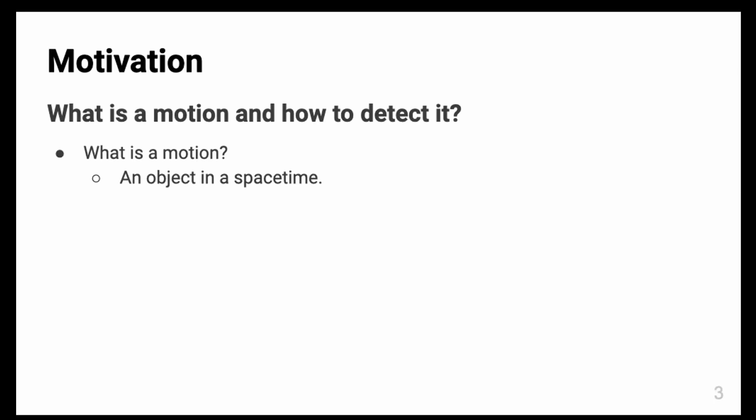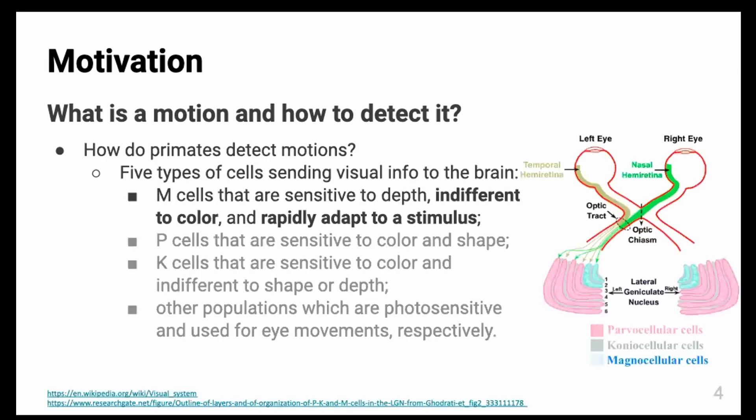Referencing how nature works can be helpful. So how do primates detect motions? There are two groups of cells: M cells and the others. The outstanding characteristic dividing the two groups is spatial affluence and temporal density of information. For M cells, they are indifferent to colors, so they have less spatial information and they rapidly adapt to stimulus, which means they have a lot denser temporal information. Let's keep this motivation in mind.